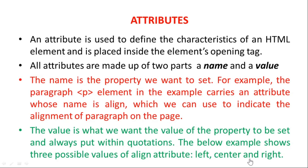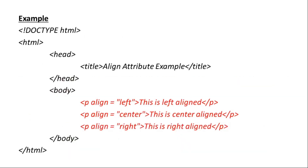Attributes define the characteristics of the element. Attributes have a name and a value. From the name, we select what kind of property we want — such as alignment, color, size, or type. The value is then assigned accordingly — for example, color set to red, or alignment set to left, center, or right.